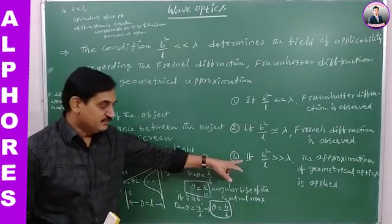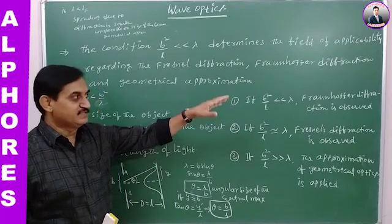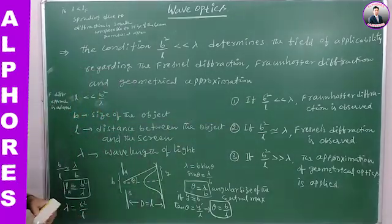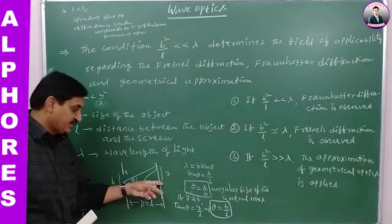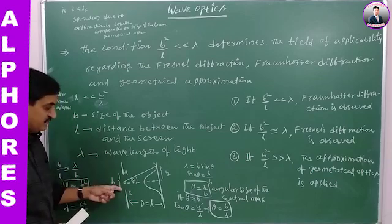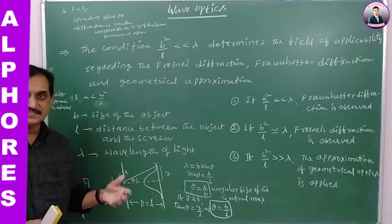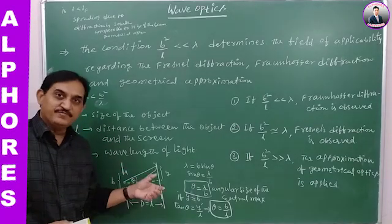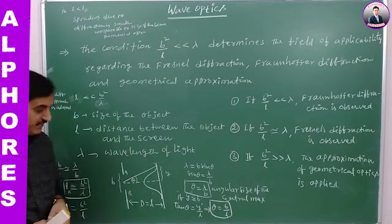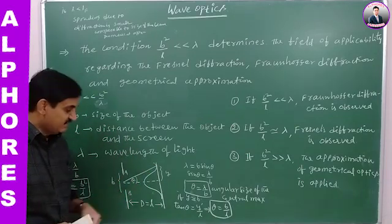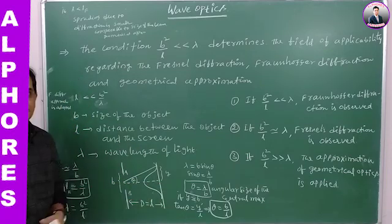We know Fresnel diffraction and Fraunhofer diffraction. But here, for what distance of the screen from the slit or obstacle does the spreading of light take place on the screen? To what amount is light spreading on the screen? To know that, we have to decide the distance of the screen from the obstacle or slit.